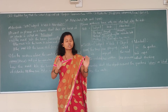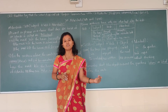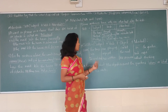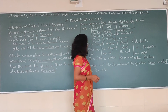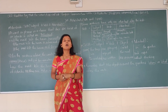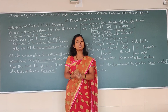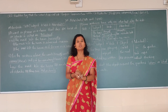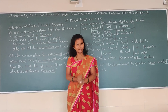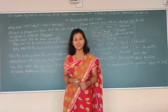Your sentence structure should be SVA — subject, verb, and adverbial — or SVOA — subject, verb, object, and adverbial. This is a very small and simple sentence structure. I hope you understand this. We will meet in the next video. Thank you.